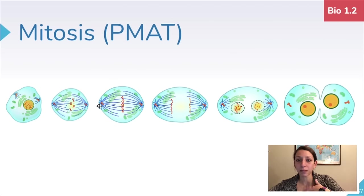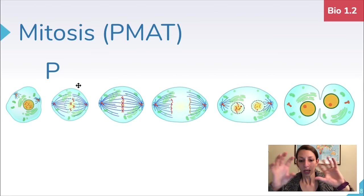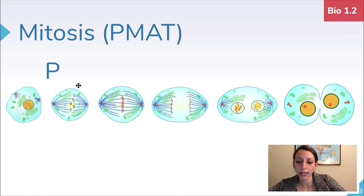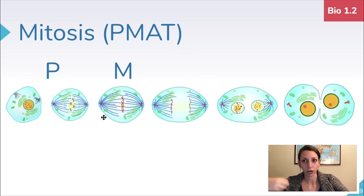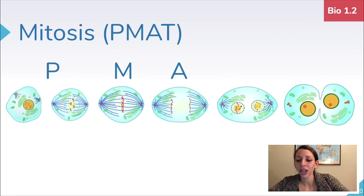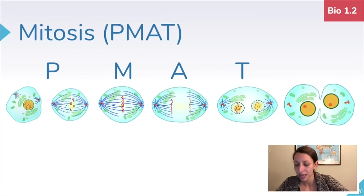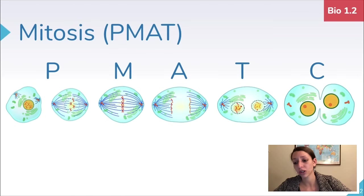Zooming in on mitosis and cytokinesis: the stages of mitosis can be remembered as PMAT — prophase, metaphase, anaphase, and telophase. In prophase, DNA condenses, the nuclear membrane dissolves, and chromosomes migrate toward the center. In metaphase, chromosomes line up along the cellular equator and spindle fibers attach to the centromeres. In anaphase, sister chromatids are pulled apart to opposite ends of the cell. In telophase, new nuclear membranes reform, and in cytokinesis the cytoplasm splits, producing two daughter cells with decondensing DNA.